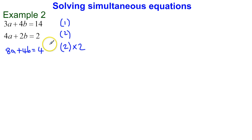Now the thing to note is that this equation and this equation mean exactly the same thing as each other. This one is just double this one, but they mean exactly the same thing. So what I can now do is carry out my elimination.